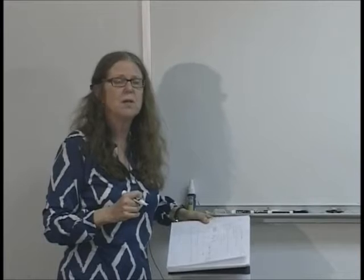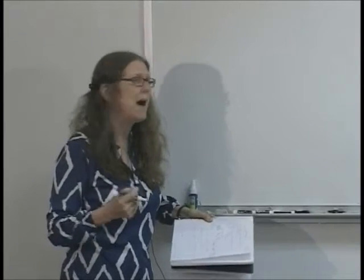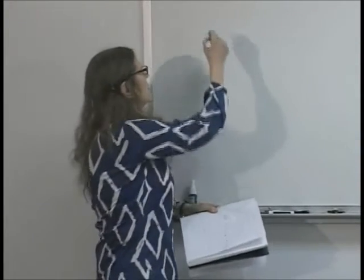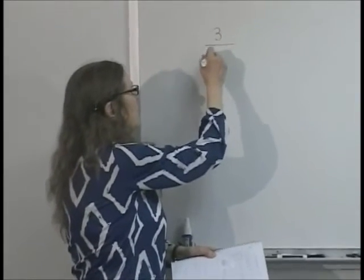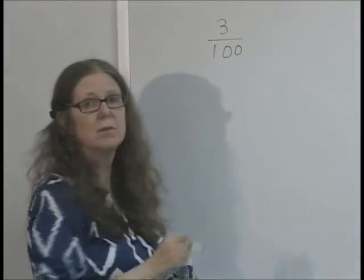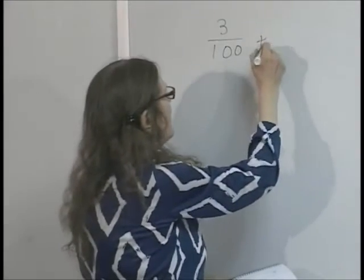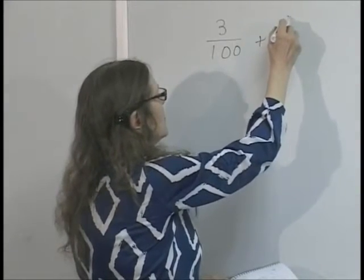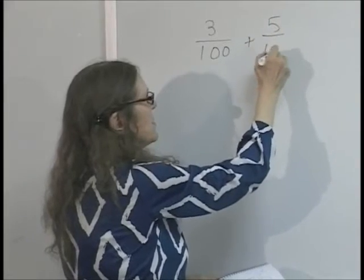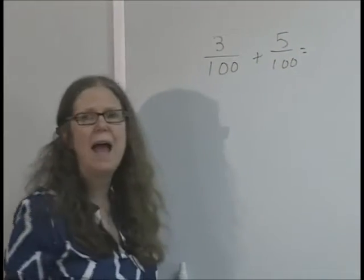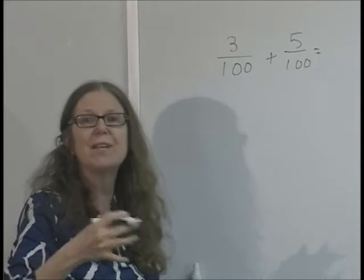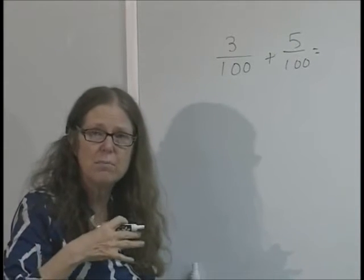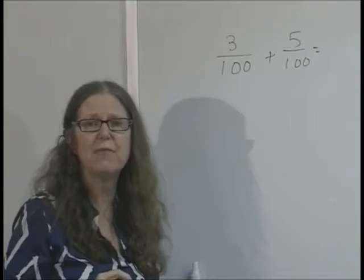Suppose my family ate three of those pieces, that would be three hundredths, and my friend's family ate five of the pieces, that would be five hundredths. How much of the cake would my family and my friend's family have eaten together?